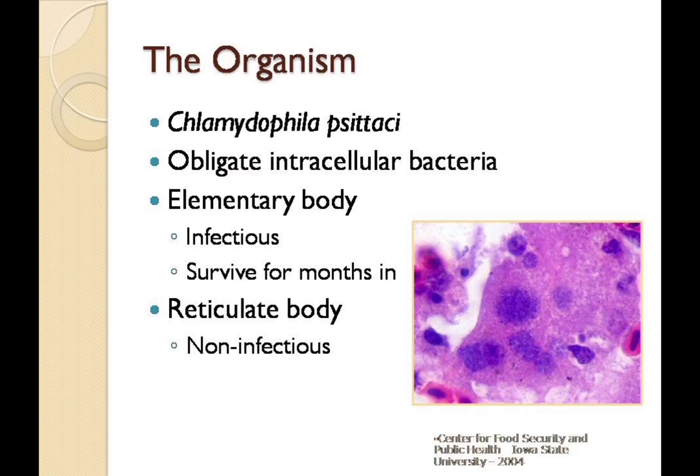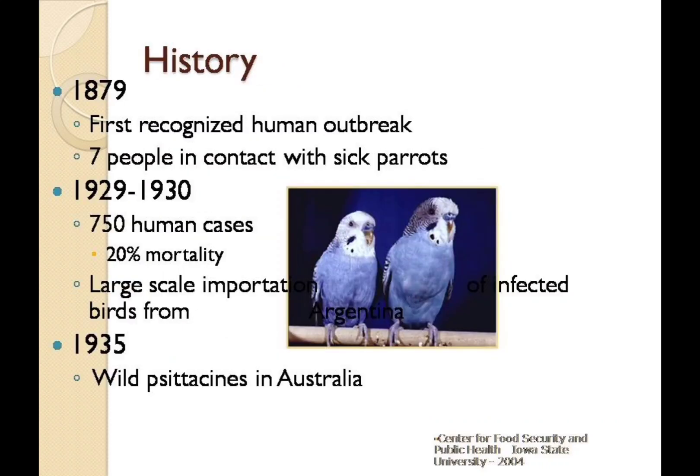The elementary body is thought to survive for prolonged periods in the environment but cannot replicate. After attaching to a susceptible host cell, the elementary body enters the cytoplasm and transforms into a larger flexible wall form called the reticulate body. The reticulate body is non-infectious and is incapable of extracellular survival.